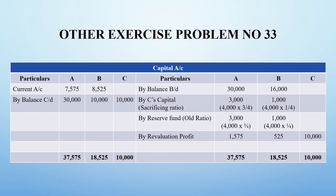The goodwill amount of 4,000 that C brings is split in the sacrificing ratio between A and B and added back to the old capital. Opening capitals are 30,000 for A and 16,000 for B. The 4,000 goodwill is split in the sacrificing ratio and added. The general reserve of 4,000 is also split in the old profit sharing ratio 3:1 and added to their capitals. Revaluation profit is also added on the credit side.